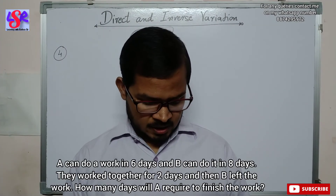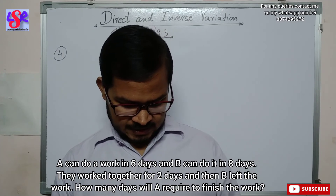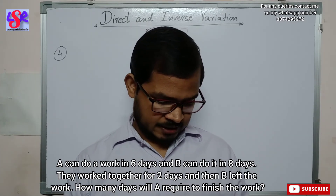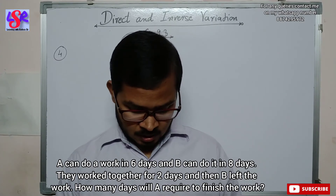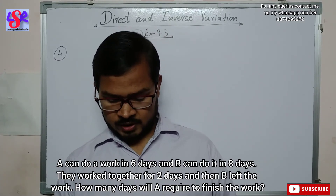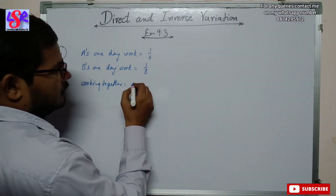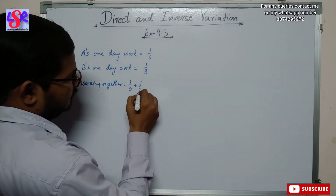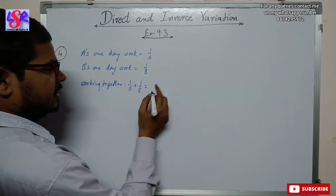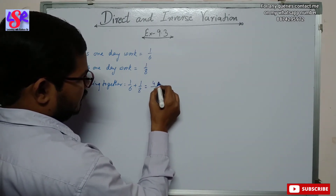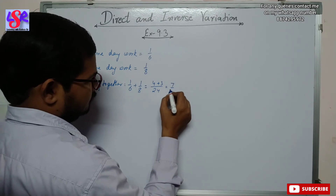Now question number four: A can do a piece of work in six days and B can do it in eight days. They work together for two days and then B leaves the work. How many days will A require to finish the remaining work? A's one-day work is one upon six and B's one-day work is one upon eight. Working together, their combined work is one upon six plus one upon eight. The LCM of six and eight is twenty-four, giving four times and three times, which equals seven upon twenty-four.